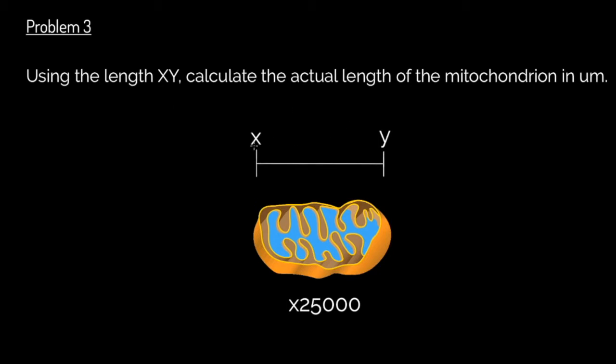And problem three, using the length XY, which of course is this value here, calculate the actual length of the mitochondrion in micrometers. So what we're trying to do here is we're trying to find out having had this blown at 25,000 times bigger, what would its actual size be in the real world? So let's see if we can do that. We follow our stages as ever.